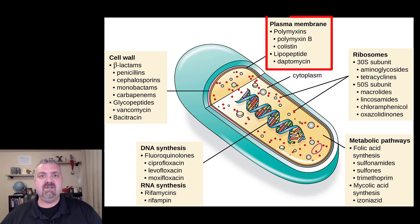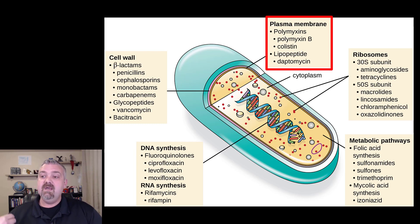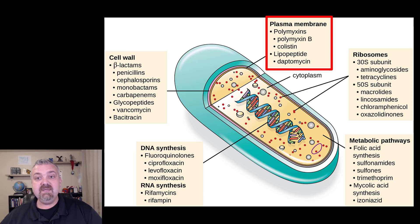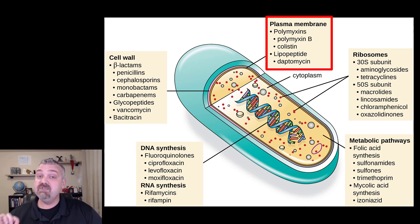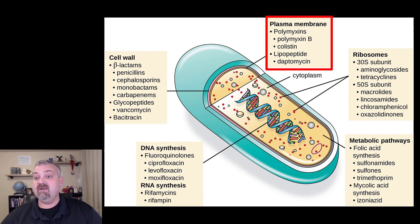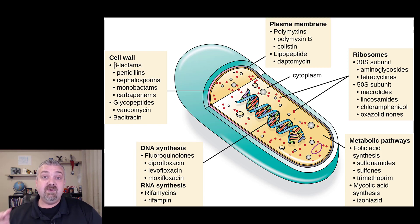The plasma membrane inhibitors are going to be pretty rare because plasma membranes are the same as ours — we have phospholipid bilayer plasma membranes just like bacteria do. So most of these are going to have to either be used topically like polymyxin B, or they're going to come with side effects like colistin. But colistin is a super important antibiotic — we'll do a separate video just on that one because it is truly our last line of defense against some of the scariest organisms on the planet right now.